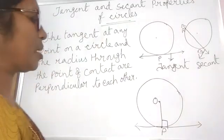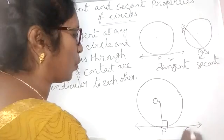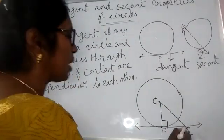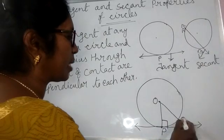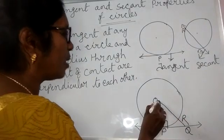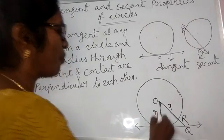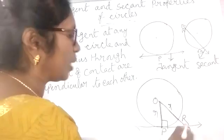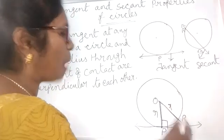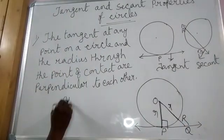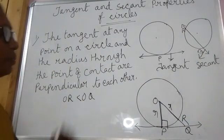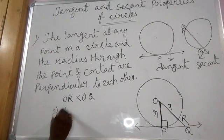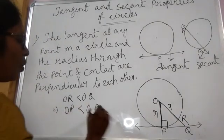How can we say that? Let us take any other point Q on this line and join OQ. OQ intersects the circle at R. OP and OR are the radii of the circle. OR is part of OQ, so OR is less than OQ. Also, OR is equal to OP, which implies OP is smaller than OQ.